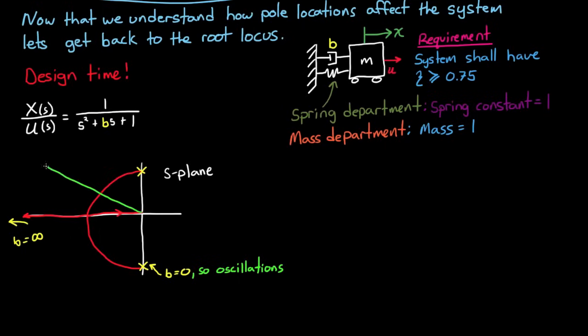So now at this point I can draw my two lines of constant damping ratio at 0.75. And I know that I need to pick a value of b that puts the poles of this transfer function somewhere along that blue line. I'm going to choose a value at these yellow x's because this allows me to buy the smallest, lightest damper I can while still meeting system requirements. And so we need a damping coefficient of 1.5. I wrote zeta equals 1.5, but I really meant b equals 1.5.